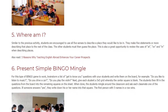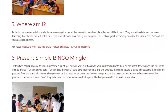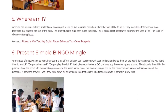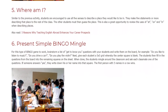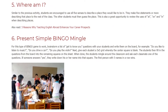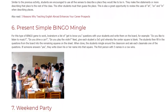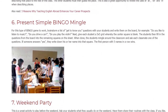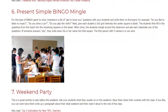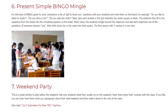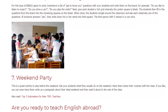Activity 6: Present Simple Bingo Mingle. For this bingo game, brainstorm a list of get-to-know-you questions with your students and write them on the board — for example, 'Do you like to listen to music?', 'Do you drive a car?', 'Do you play the violin?' Next, give each student a 5x5 grid with the center square blank. Students fill in the questions into the remaining squares. They then mingle around the classroom, asking each classmate one question. If someone answers yes, they write down that person's name in the square. The first person with five names in a row wins.